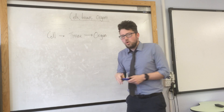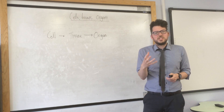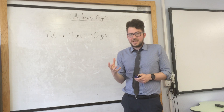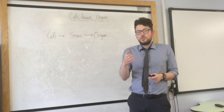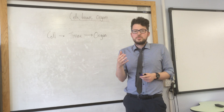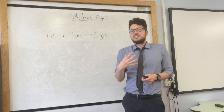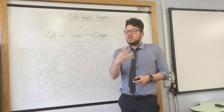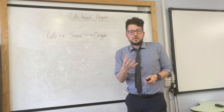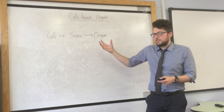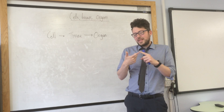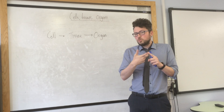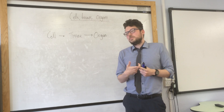An organ is different tissues working together to carry out a function. I'm sure you know lots of examples of organs — heart, kidneys, lungs, etc. So the heart, for example, is made of muscle tissue and a type of tissue called valve tissue.